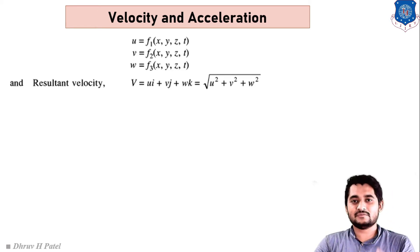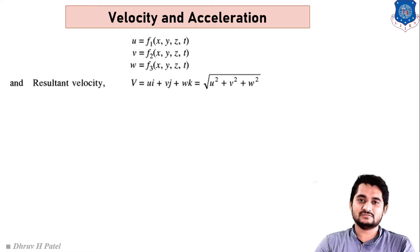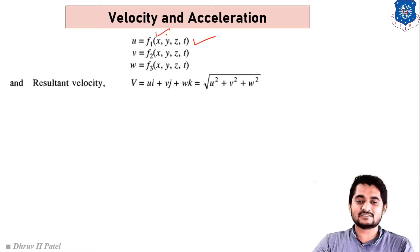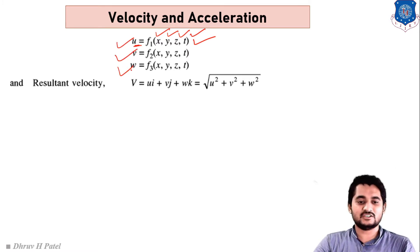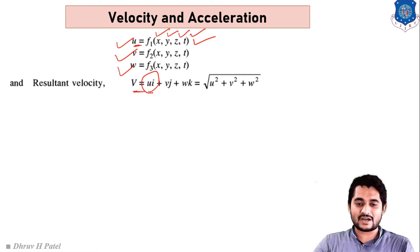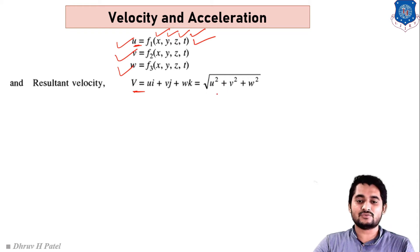First, let us take the basic concept about velocity. Velocity is a vector function, so it depends on direction as well as its magnitude. Velocity depends on x, y, z parameters and time. The x-direction velocity is u, y-direction velocity is v, and z-direction velocity component is w. We can write velocity as V = u·i + v·j + w·k. The resultant velocity is the square root of u² + v² + w².